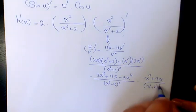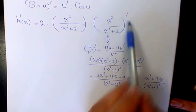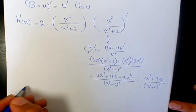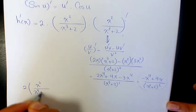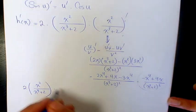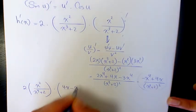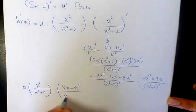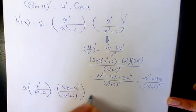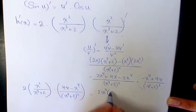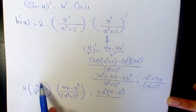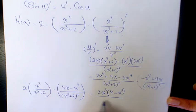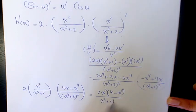This expression is the derivative of the inner part. Writing the whole thing together: 2 times x squared over x cubed plus 2, times 4x minus x to the power of 4, divided by x cubed plus 2 to the power of 2. Factoring out x, x squared becomes x cubed, giving 2x cubed times (4 minus x cubed), divided by x cubed plus 2 to the power of 3. That's the final answer.